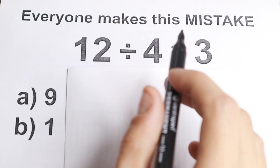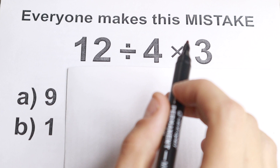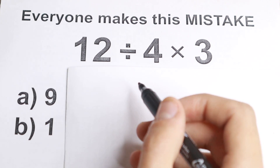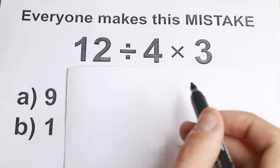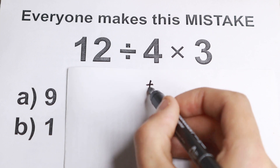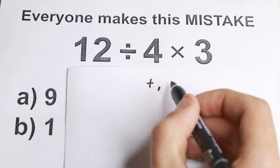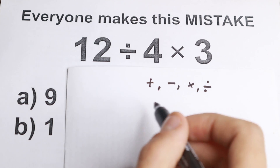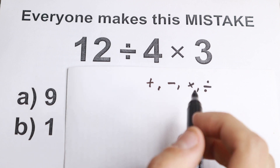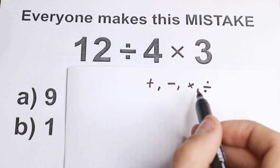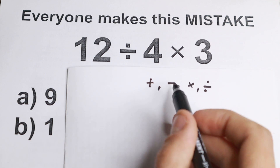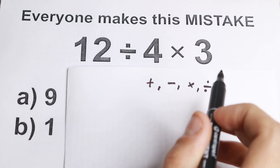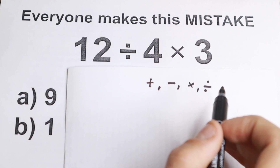This is where the acronym comes in — we're talking about the order of operations. A math operator is a thing like addition, subtraction, multiplication, and division. These are the main ones we need to understand. So the first step is to understand mathematical operations: addition, subtraction, multiplication, and division.